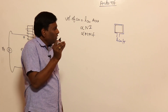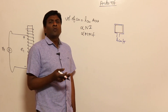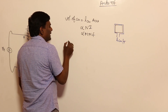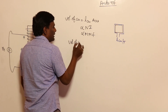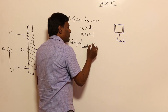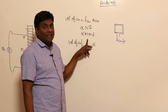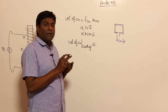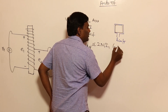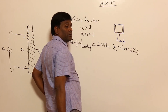In gate exams, only comparison questions come between two-winding transformer and auto transformer. For a two-winding transformer, volume of copper is directly proportional to primary MMF plus secondary MMF. Since primary MMF equals secondary MMF, this becomes 2·N1·I1, where N1·I1 is primary MMF and N2·I2 is secondary MMF.